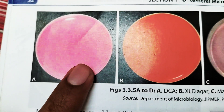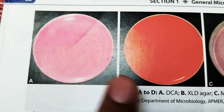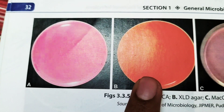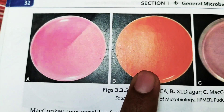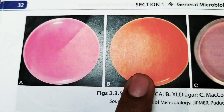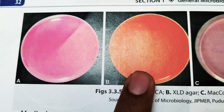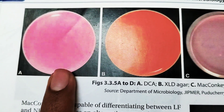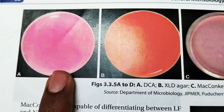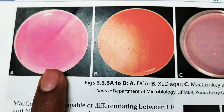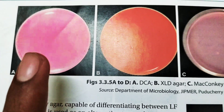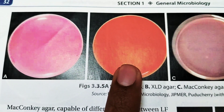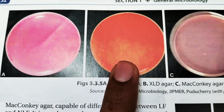DCA (deoxycholate citrate agar) and XLD (xylose lysine deoxycholate agar) are shown here. On DCA we can see yellow color colonies with a black center, and on XLD we can see red color colonies with a black center.